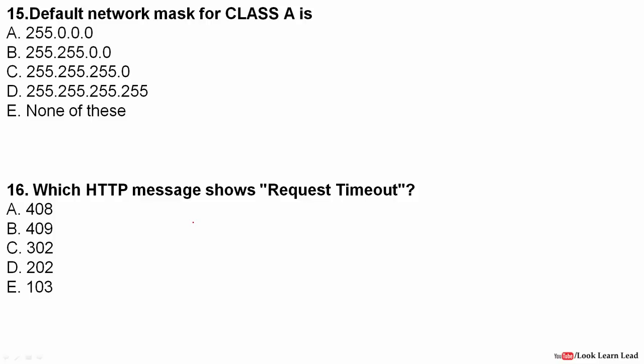What is the default network mask for Class A? The default subnet masks are: Class A — 255.0.0.0, Class B — 255.255.0.0, Class C — 255.255.255.0. So the default network mask for Class A is 255.0.0.0.